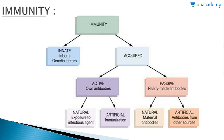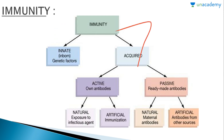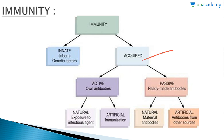Immunity is of two types: innate, which is inborn immunity, and acquired immunity. Acquired immunity is further of two types — active immunity and passive immunity. Active immunity is produced through the body's own antibodies.